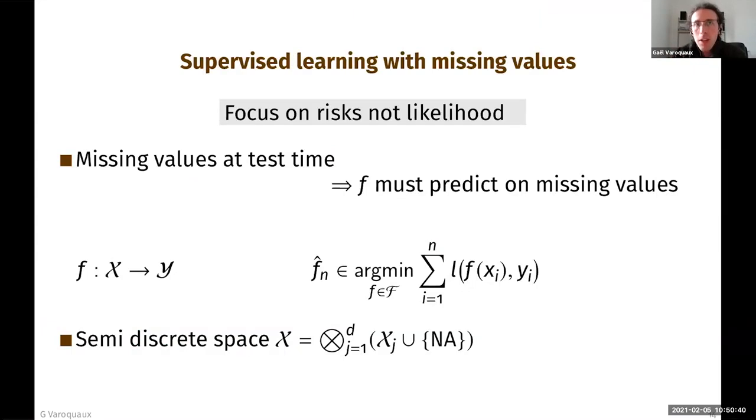And so our settings really is actually a merge between the two things that I've presented. Here we focus on risks and not likelihood. So I'd like to say that the core results of the MAR assumption, the historical one, does not immediately apply, and some of the dogmas may not carry over. We do have missing values at test time, so we need a function that must predict on missing values.